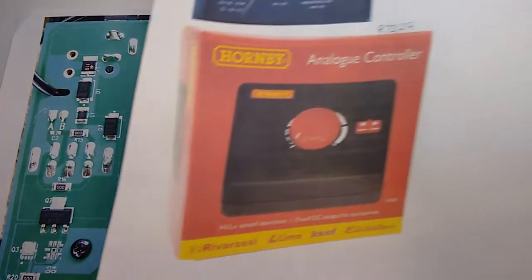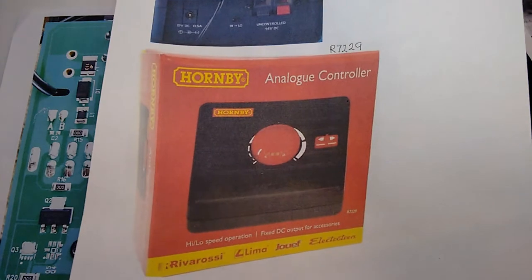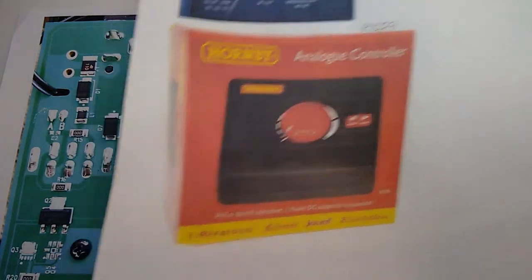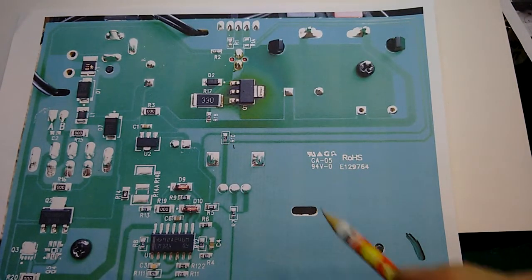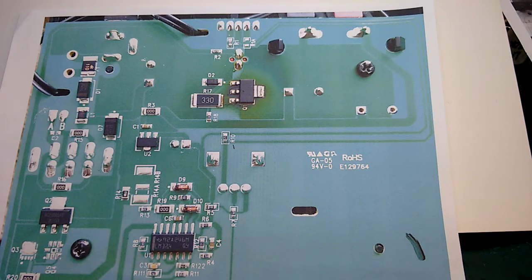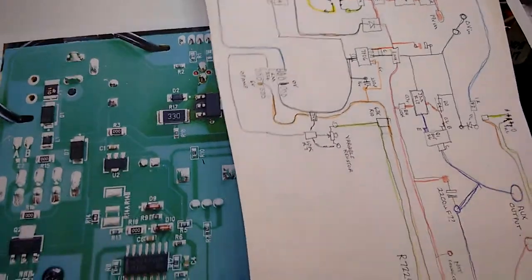Hornby analog controller part two. In my first part, I looked at the circuit board and tried to analyze it to find faults, not make them, but find them.